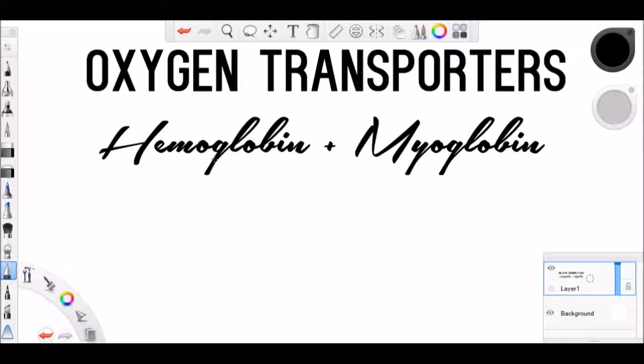Myoglobin is also found in the muscle cells, and a way to remember that myoglobin is found in muscle cells is the word myofibril, so both have the same prefix, myo.